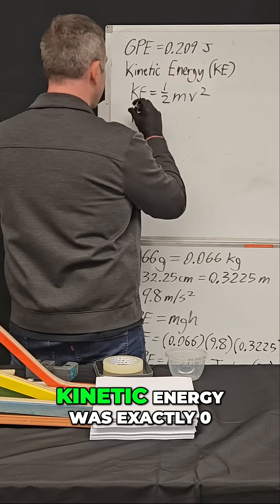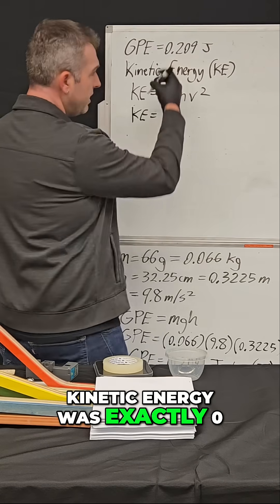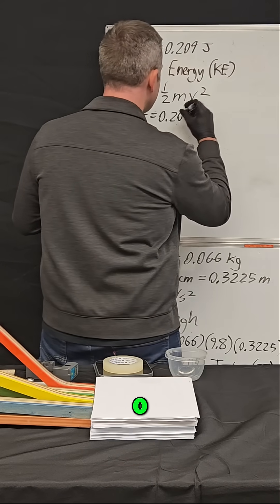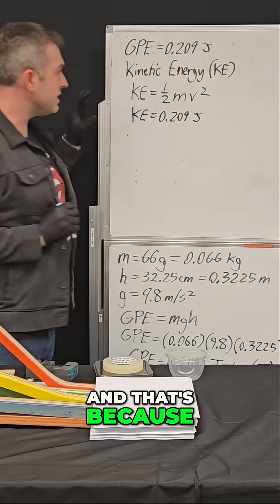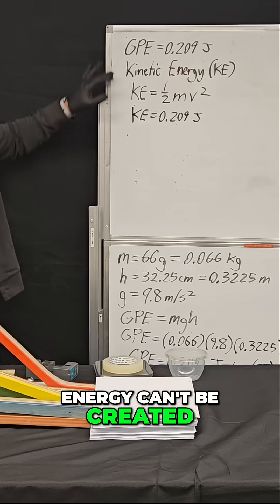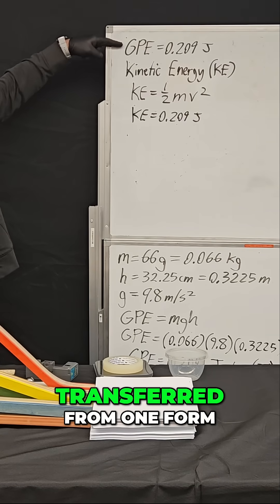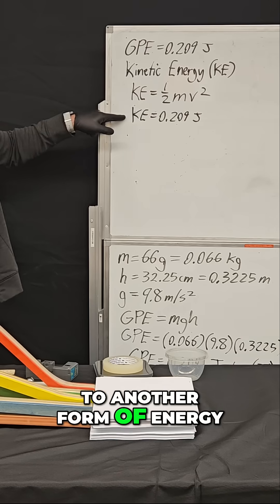And so we're going to say that the kinetic energy was exactly 0.209 joules. And that's because, again, energy can't be created or destroyed. It can only be transferred from one form to another form of energy.